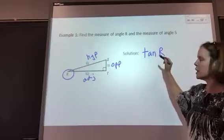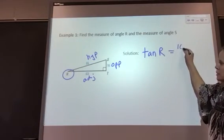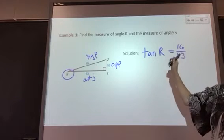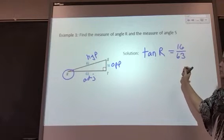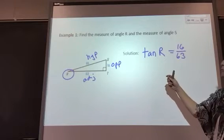If I'm looking for the tangent of R, that ratio is the opposite leg over the adjacent leg. We've done that and calculated it as a fraction and a decimal. To get the angle measure, we have to do the inverse.